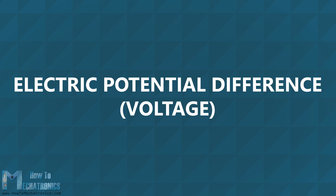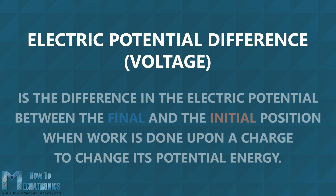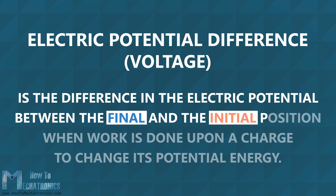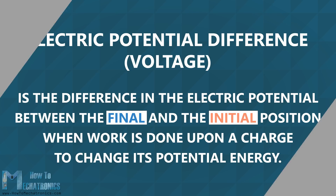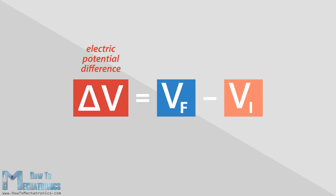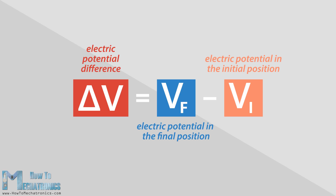Now we can move on to the electric potential difference, or voltage. By definition, the electric potential difference or voltage is the difference in the electric potential between the final and the initial position, when work is done upon a charge to change its potential energy. Or the electric potential difference, delta V, is equal to the potential in the final position, VF, minus the potential in the initial position, VI.